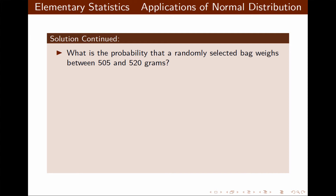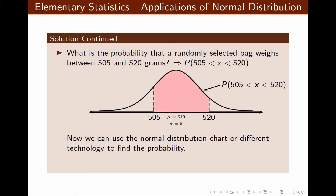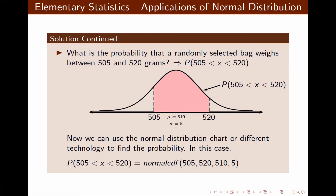The probability that a randomly selected bag weighs between 505 and 520 grams means X is between 505 and 520. After drawing and shading our desired region, we use the TI normalcdf command with lower, upper, mean, and standard deviation. That probability is 0.819, which rounded to the nearest percent is about 82%.